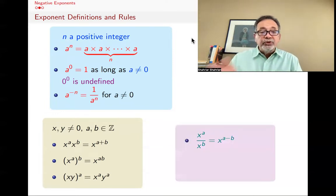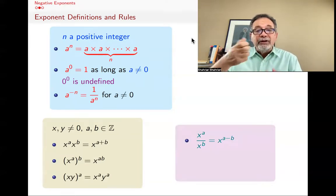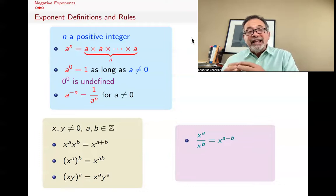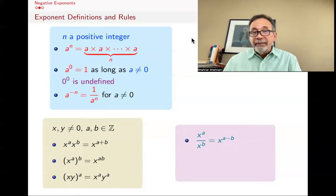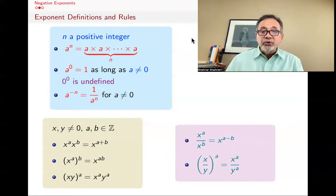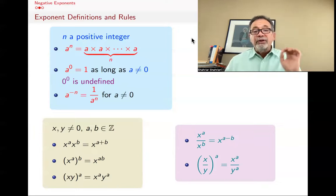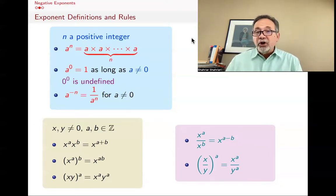We also have two other rules that follow from the previous ones. x to the a divided by x to the b — dividing two powers when the bases are the same — is that same base but you subtract the exponents. And x over y raised to the power a is x to the a over y to the a. These are true as long as x and y are non-zero. In fact, the same rules work if a and b are rational exponents, but then you have to make sure x and y are positive numbers, because if they're negative there are occasions when these rules fail.